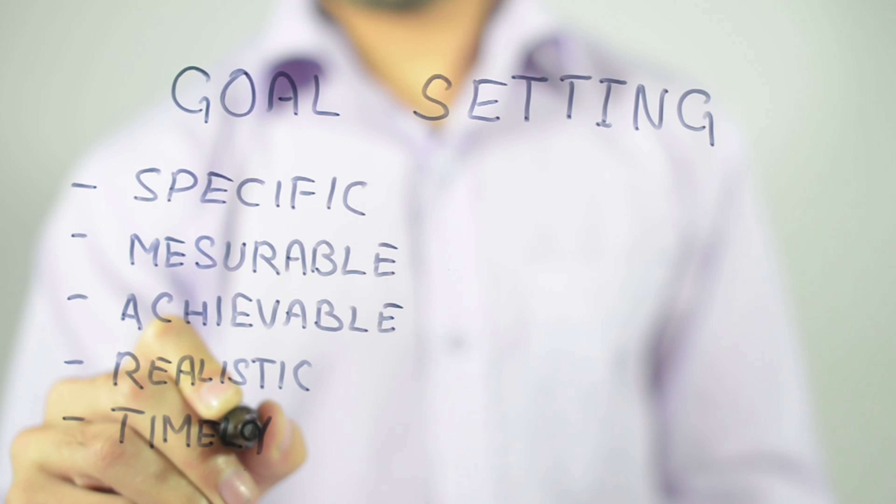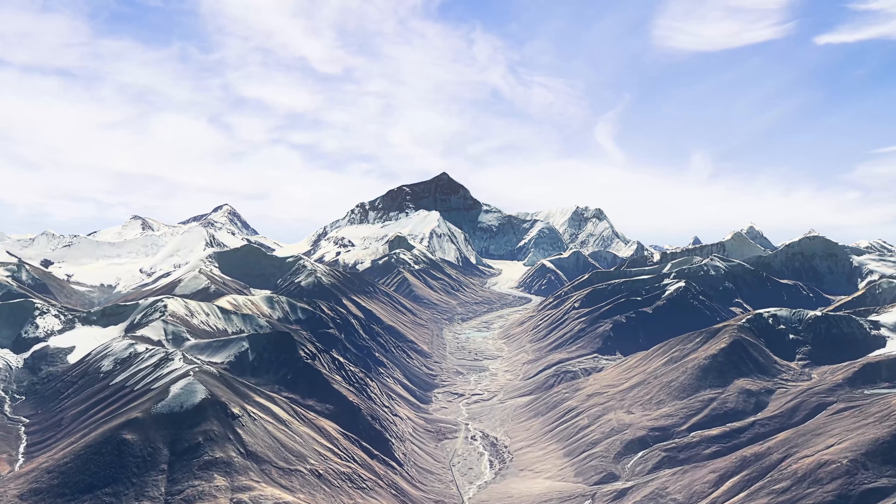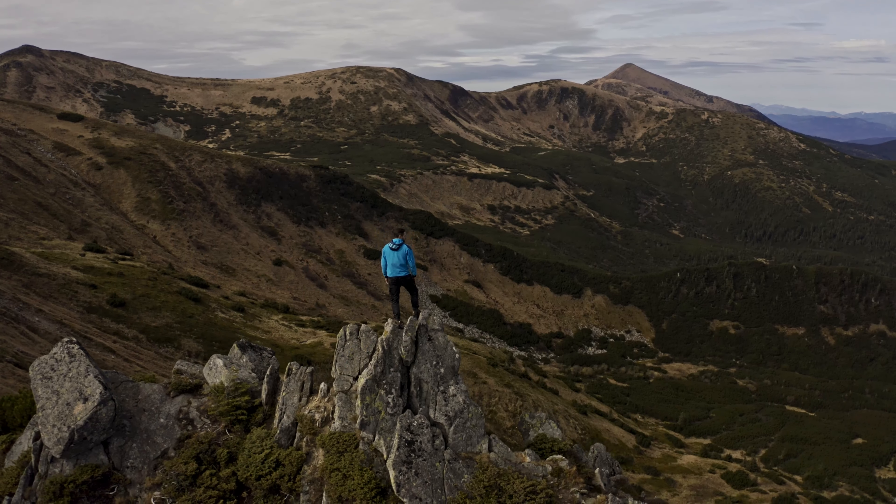There are three basic kinds of goals. Process goals are specific actions people do, like taking an hour each day to exercise or study. Performance goals are based on maintaining a personal standard, like taking continuing education courses or a student maintaining a high GPA. Finally, outcome goals are based on achieving a specific outcome, like saving money to make a down payment on a car.